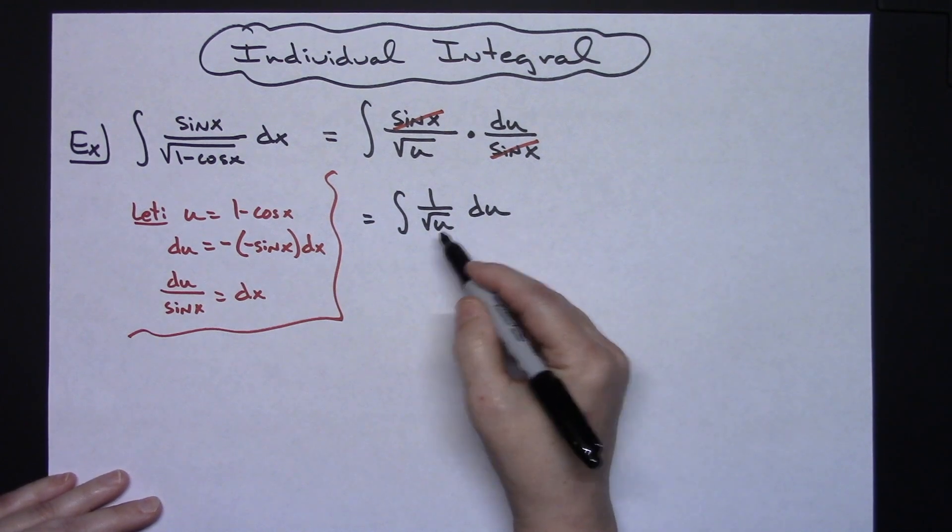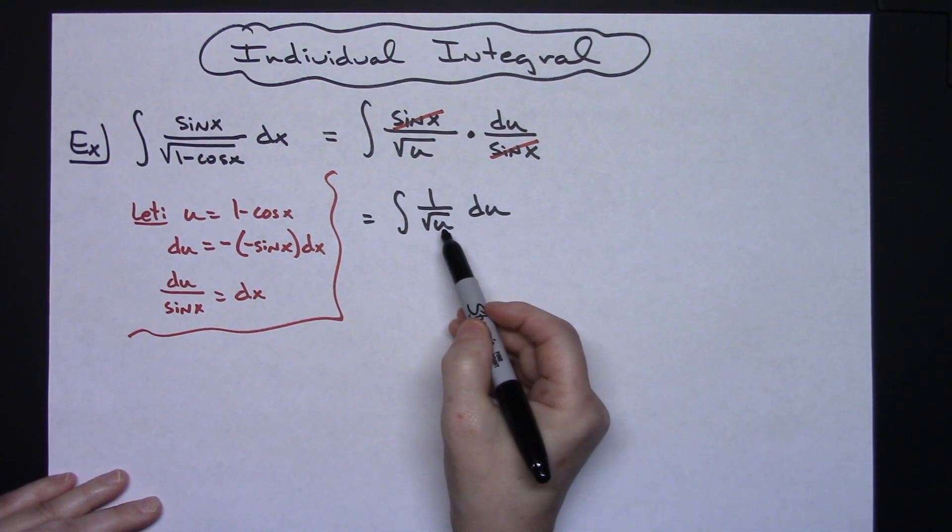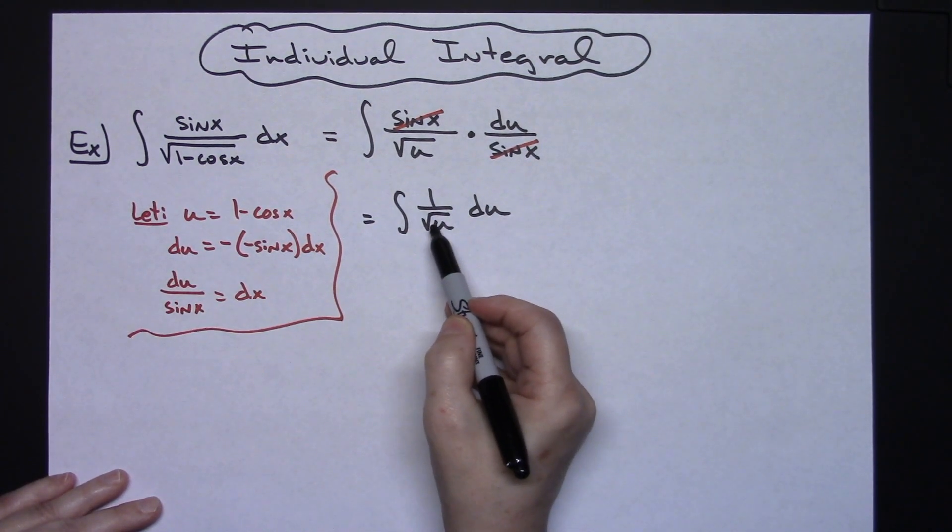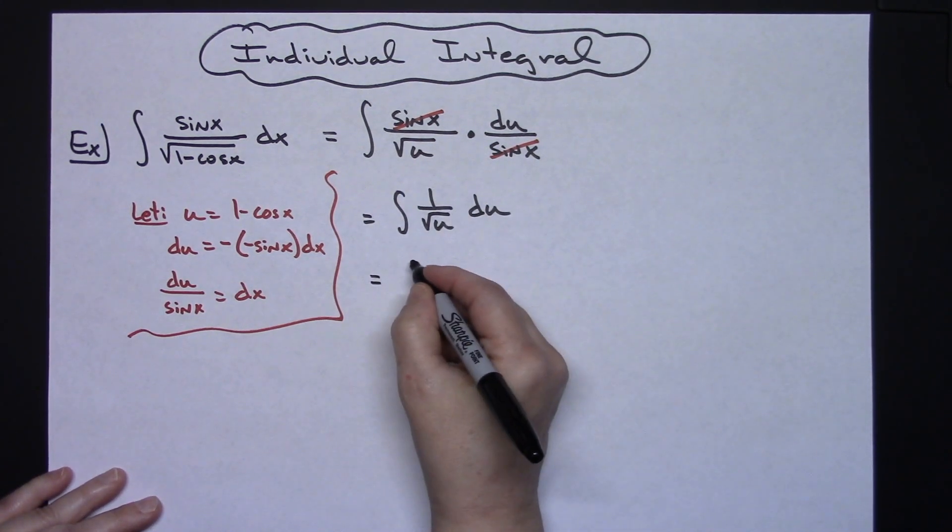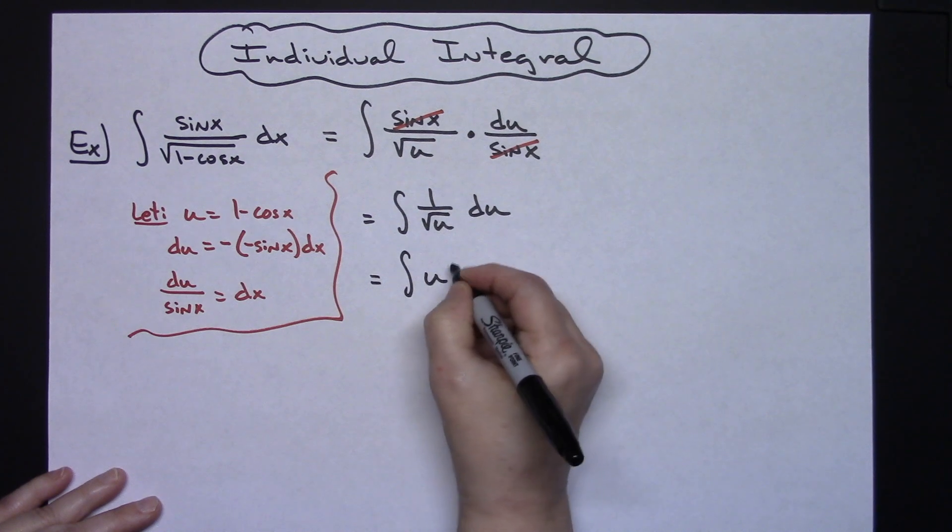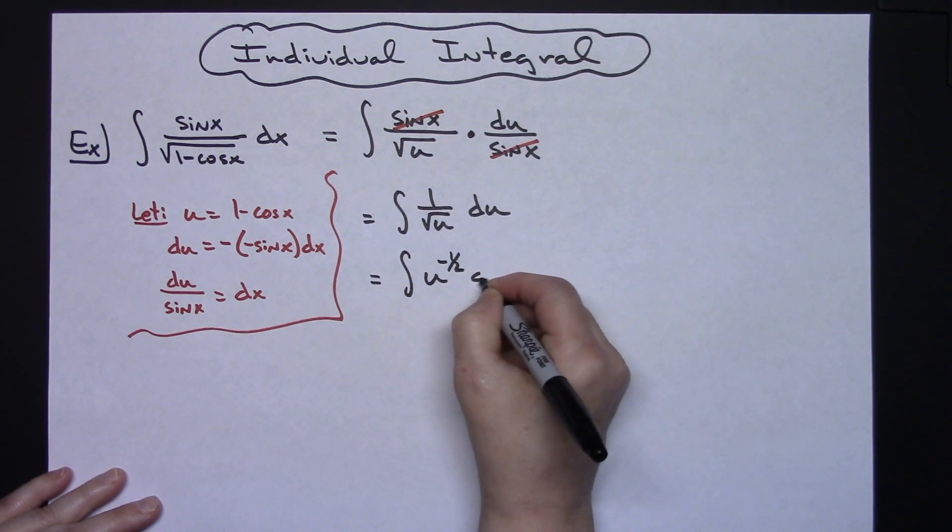I'm now in terms of all u so then I can start to integrate this. I can rewrite this as u to the one half and move it up to the top which will make it negative. So I'm going to rewrite it as the integral of u to the negative one half du.